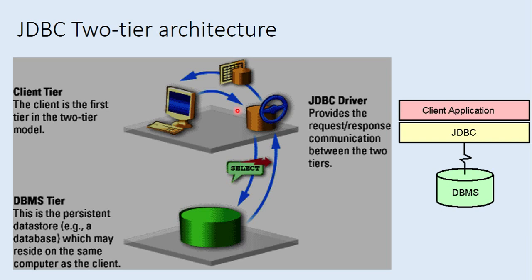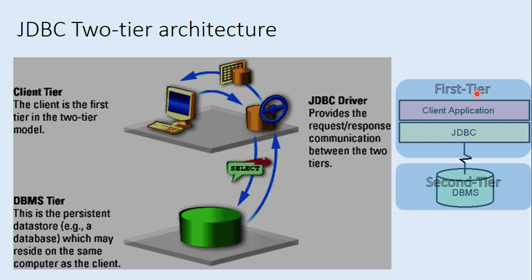Now let us understand how this two-tier architecture looks in block representation. This diagram shows the block representation of the two-tier architecture. The client application — our Java application — communicates with the database management system through the JDBC driver. The client application and JDBC driver form the first tier, and the database server is the second tier. Because of these two levels or two layers, this architecture is called a two-tier architecture.